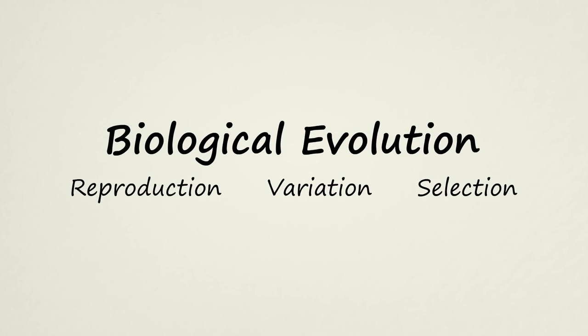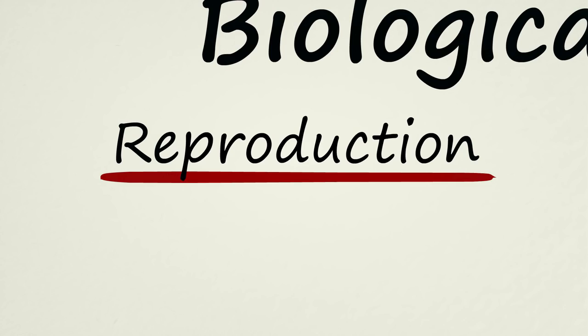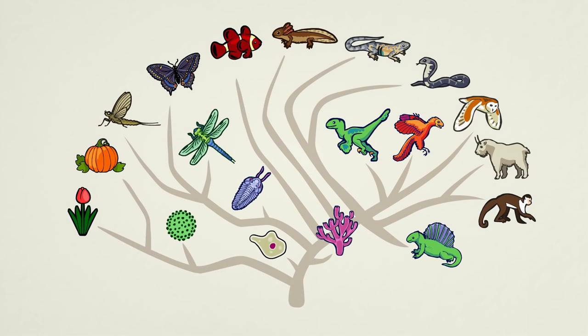Reproduction, however, is an extremely complex process in and of itself. This begs the question, how did reproduction first evolve? To try and solve this mystery, many scientists are looking into chemical evolution.